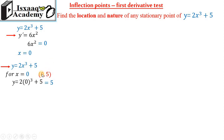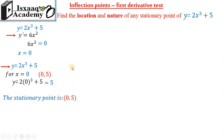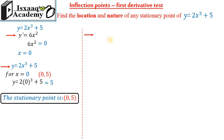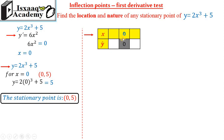At (0, 5), slope is 0, so we have the maximum, minimum, and inflection point. At x = 0, we have the number 0. For x = -1 and x = 1, we have the slope going from positive to negative and negative to positive.